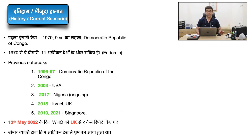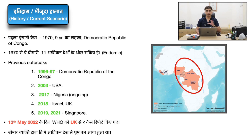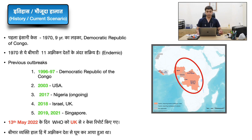The first human case was seen in the 1970s — a 9-year-old child reported in the Democratic Republic of Congo. Since the 1970s and up to 2022, this disease has been at an endemic, low level in around 11 African countries. Usually this virus was not seen outside the African continent, but there have been 4-5 outbreak episodes: the first in 1996 in Congo, then in 2003 in the US, in 2017 in Nigeria, in 2018 in Israel and the UK, and in 2019-21 some cases appeared in Singapore.